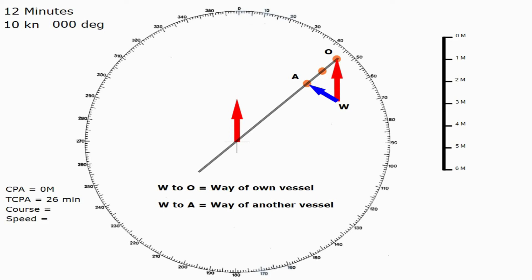So, to find out the target's course, we'll transpose that vector to the middle, extend it out to the edge, and we can simply read off the edge of the diagram to determine their course. In this case, it's 303 degrees.